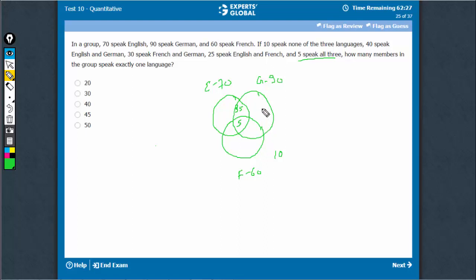30 speak FNG. 5 is here, so this becomes 25. And finally, 25 speak ENF. 25 is here, 5 here, so this becomes 20. And how many speak exactly one language?